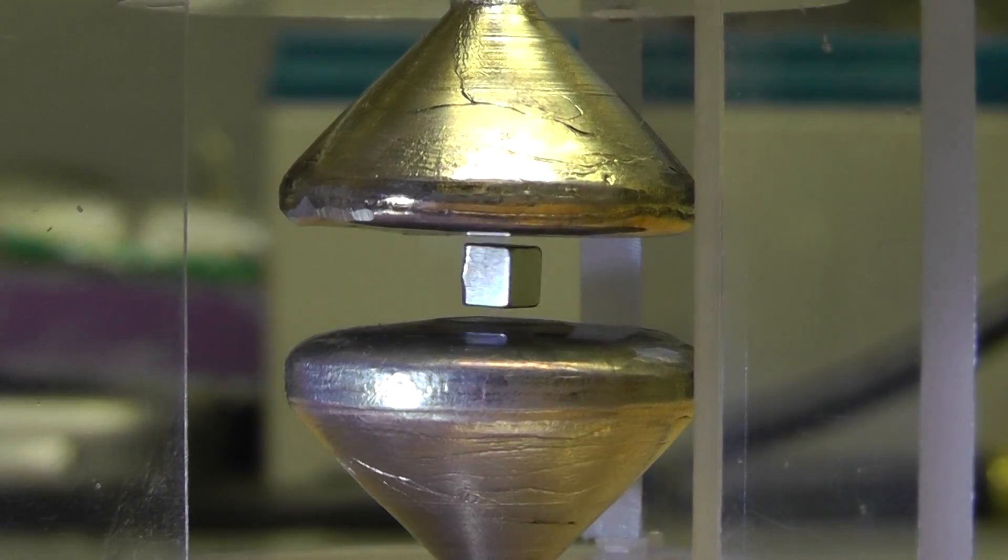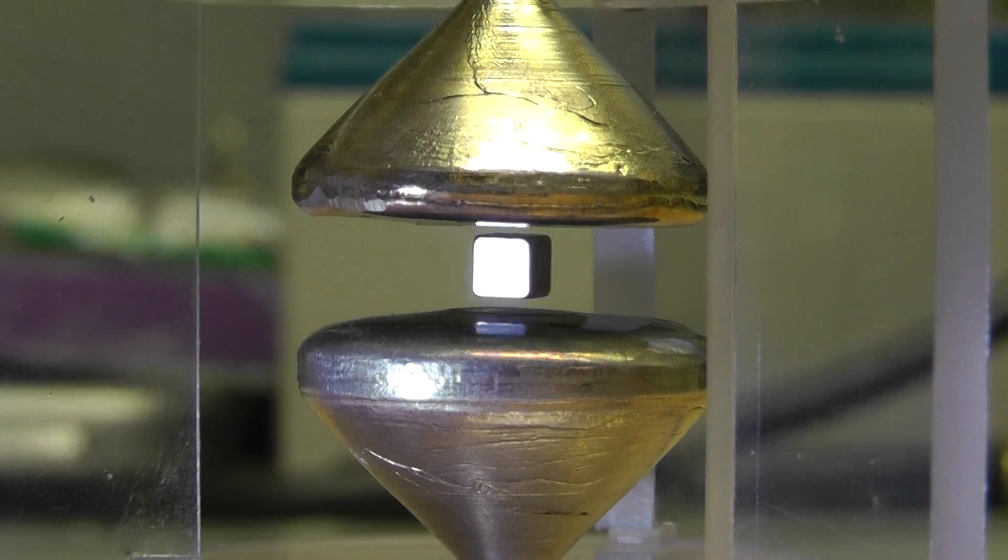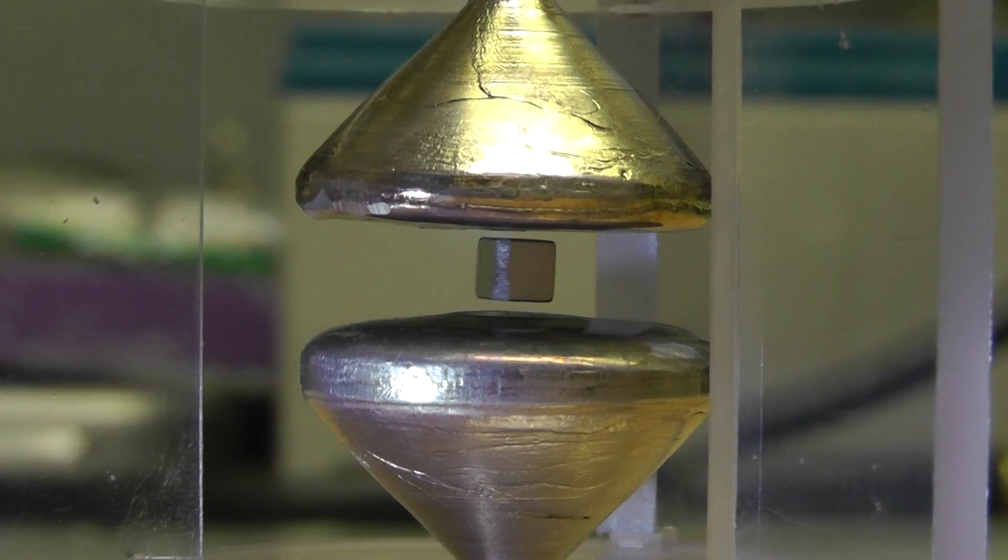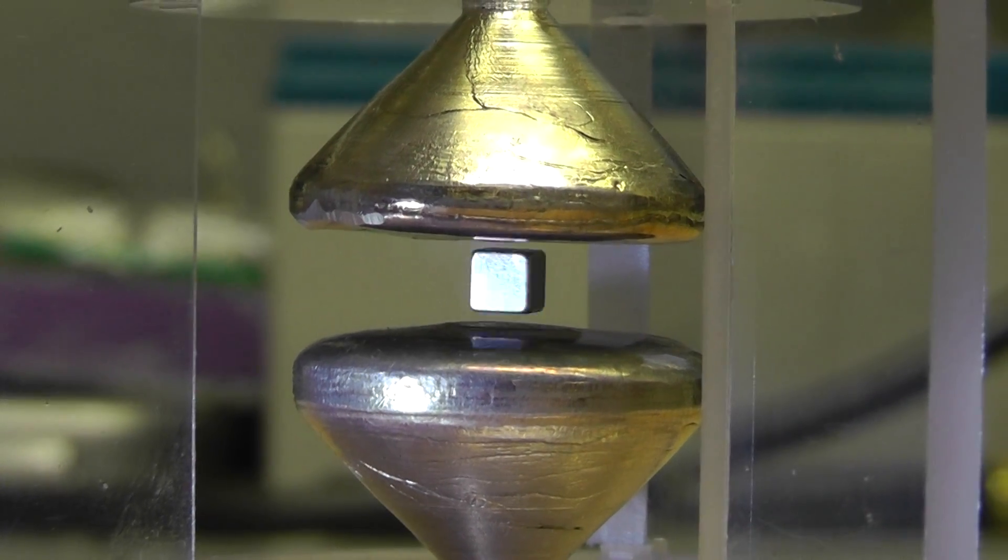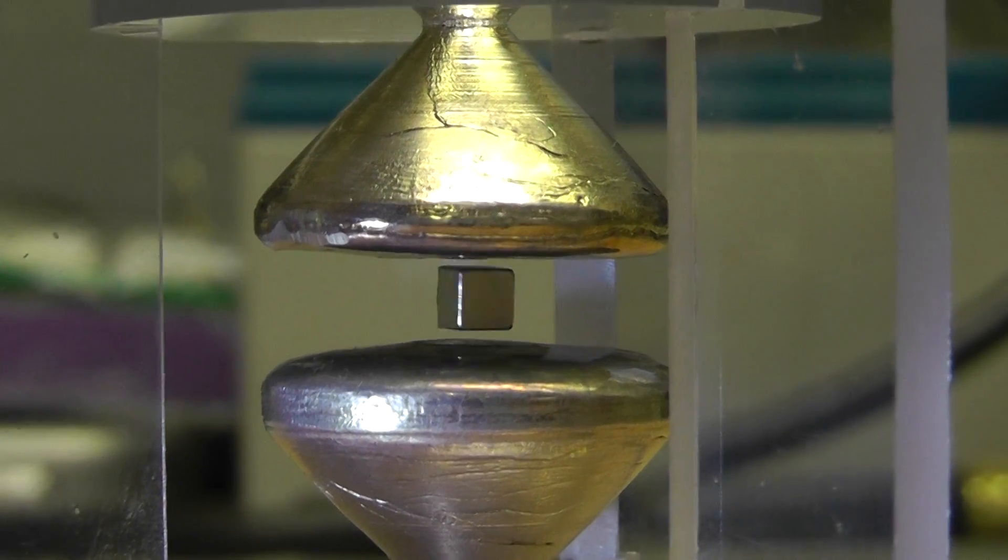Now there's a, I think a carbon graphite something or another that you can also do this with. Other than that, you'd have to get this material super cold, a type of ceramic material, and get it super cold to be able to make this work like this. But this is the way to do it in room temperature.